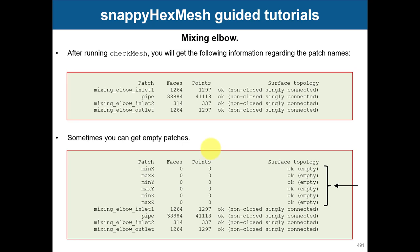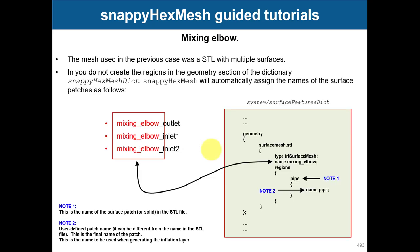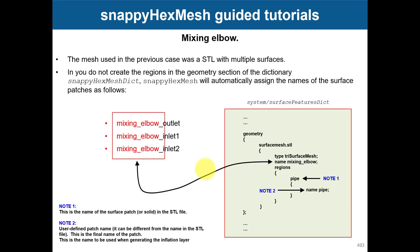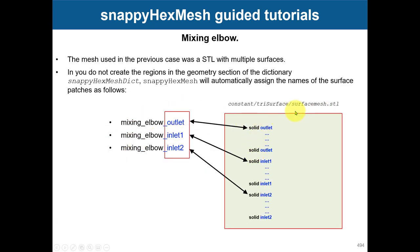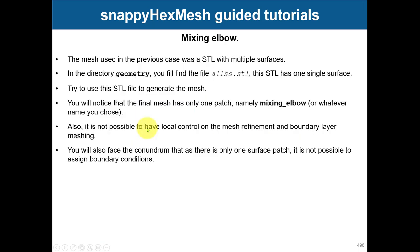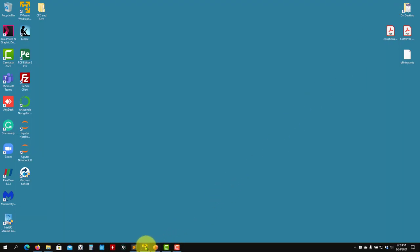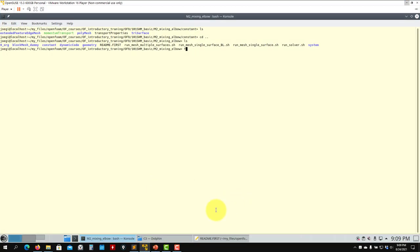An important note: in this case we're using an STL that has multiple regions — this is very important. When you have internal regions, it is strongly recommended to have the STL with multiple regions. See here the steps, the naming conventions, and how to access all the patches information. We're going to do it first with multiple regions, then single regions.